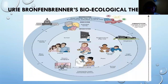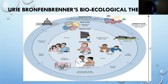The illustration shows the layers: the microsystem — containing the child, the daycare center, the family, and the immediate community — followed by the mesosystem, the exosystem, and the macrosystem. In Bronfenbrenner's revised version of the theory, the chronosystem also exists. The chronosystem refers to changes in a person's behavior that occur through environmental changes over time.